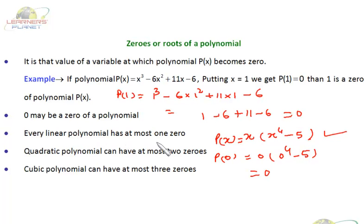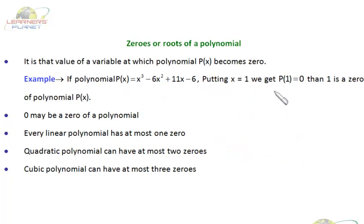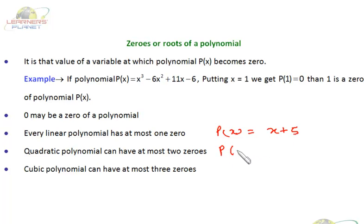Every linear polynomial has at most one zero — it has to be there. Every polynomial has zeros. If it is a linear polynomial, it will have exactly one zero. For example, if p(x) = x + 5, and I put x = -5, I get the value as 0. That means -5 is a zero of this linear polynomial.